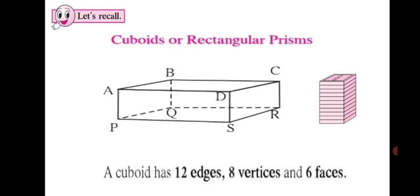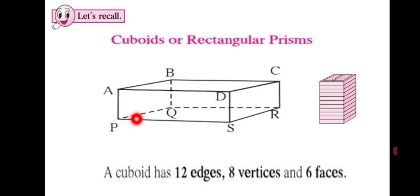How many edges does a cuboid have? Let's count the edges. AB is one edge, AP is another edge. If we take the top rectangle we will have 4 edges on top, similarly 4 edges down and 4 edges at the sides. So total 4 threes are 12 edges a cuboid has.